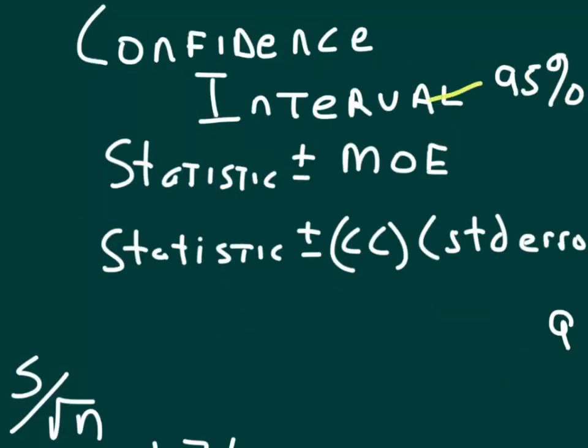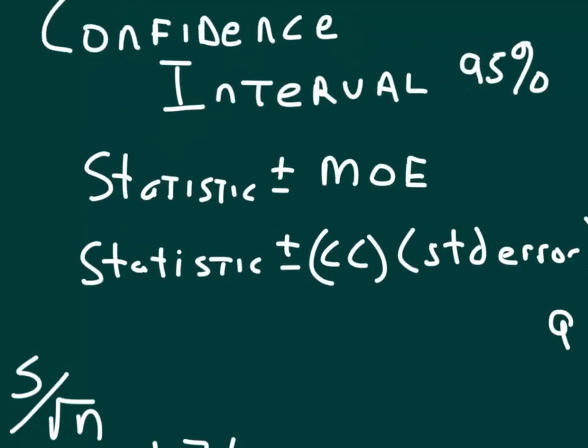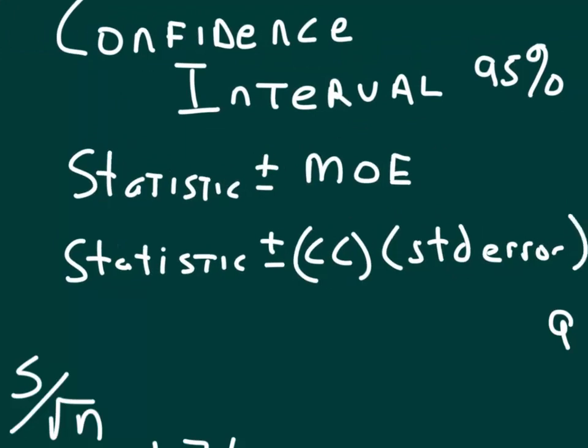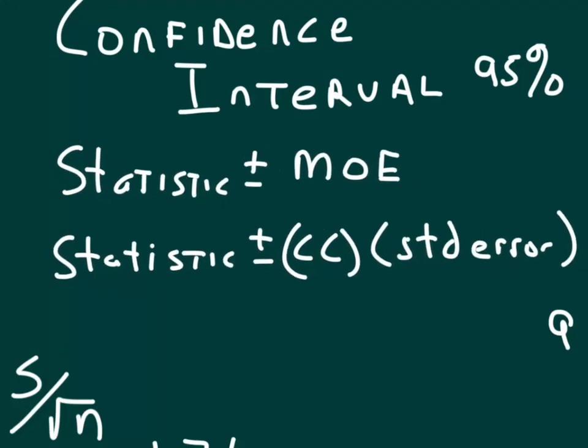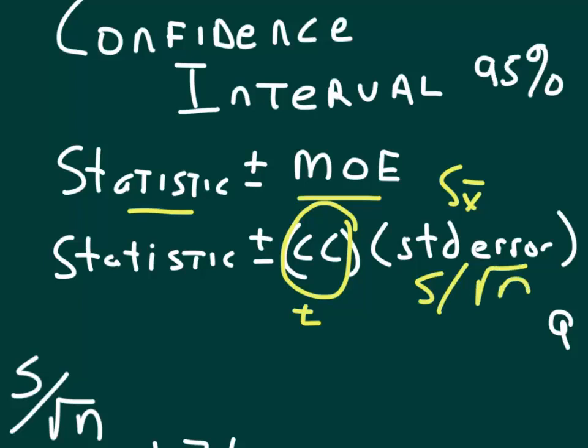So for our confidence interval, we want a 95% confidence interval. Our general formula is always going to be statistic plus or minus the margin of error, where margin of error is some confidence coefficient, which will now be t because we have a sample standard deviation. Of course, the standard error will be S x̄, which is S divided by the square root of N.